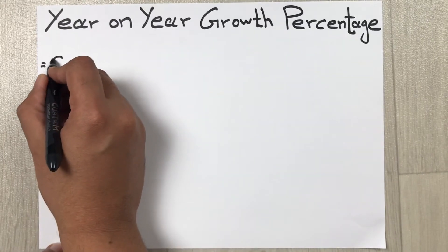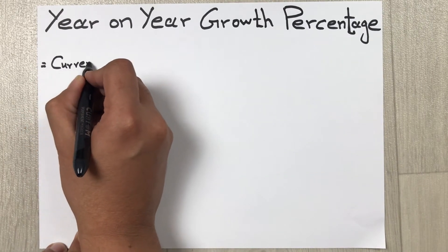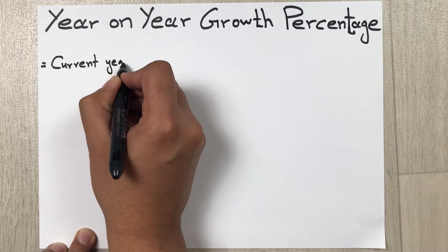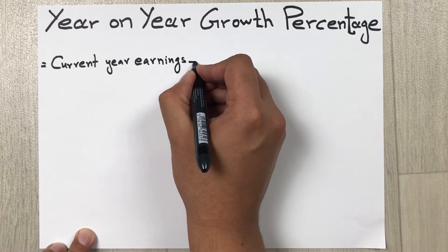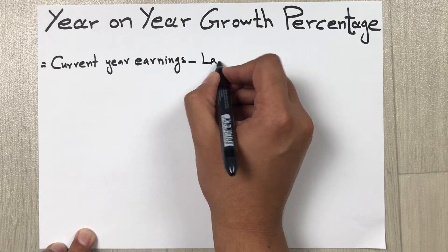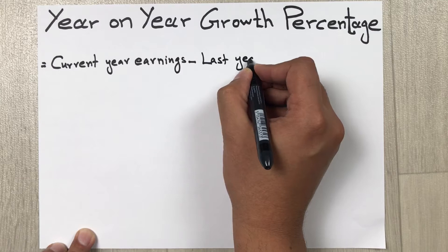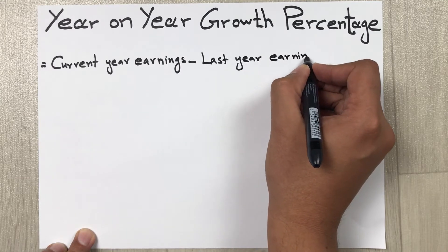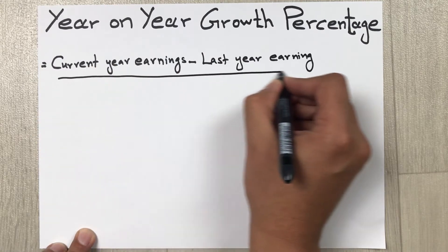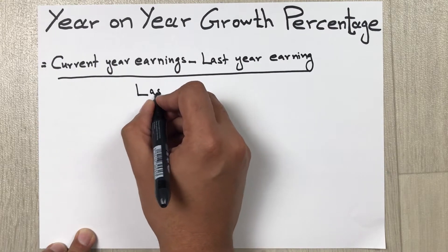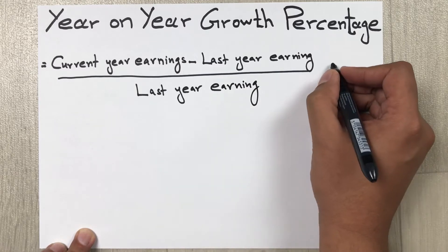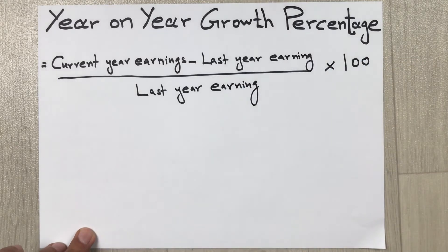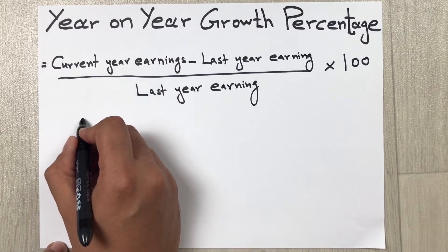Current year earnings minus last year earnings, divided by last year earnings, multiplied by 100. This is the formula. For example, your 2022 earnings